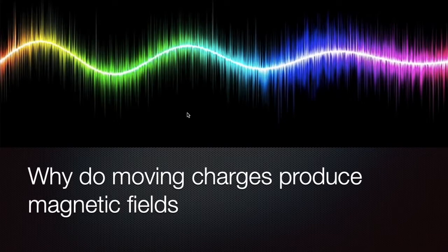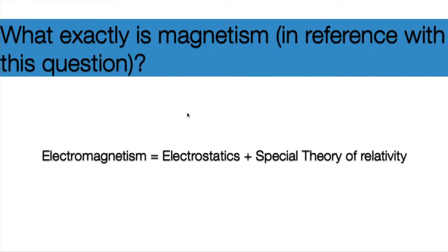And it's not your teacher's fault or anything. This subject is a very advanced subject, so I'll just get into it. So coming to the question, what exactly is magnetism in reference with this question? As you can see here, electromagnetism is nothing but electrostatics plus special theory of relativity.